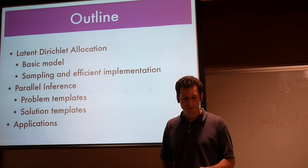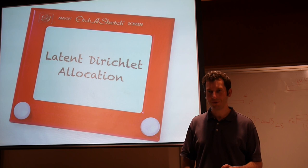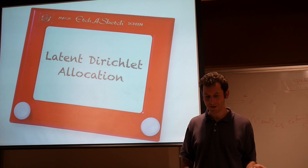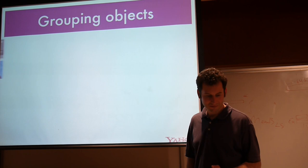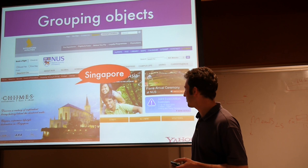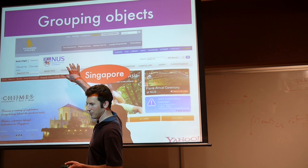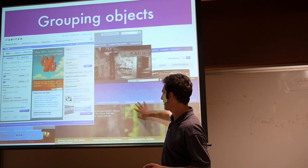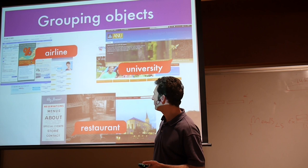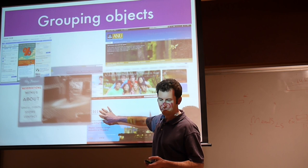I'm going to start with latent Dirichlet allocation. Some of you may or may not have seen this already. There are more slides in this course than there's time to get through; the rest is supplementary material you can look through at your own leisure. So let's briefly explain how LDA works. You've probably seen pictures like this before: I have some web pages, and I could cluster them — that's probably Singapore, that's Japanese, you could see the Australian National University, recognize the airlines — and group them by airline, university, and restaurants, or by countries.